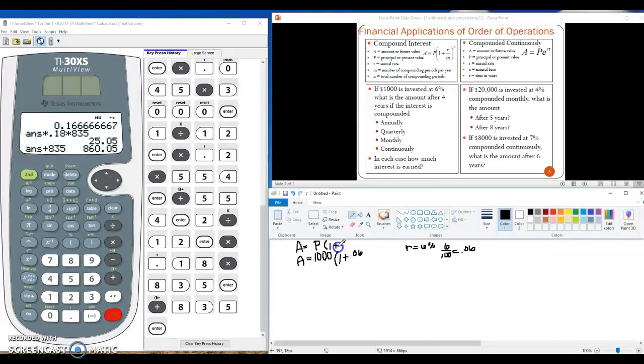Next in our formula we have divided by M. So reading up here, we have M is the number of compounding periods per year. Since we are dealing with annual interest, we would have one period per year, and so that is our M value. So I'm just going to put that over one.